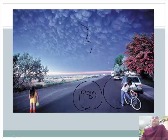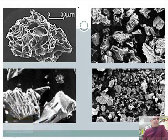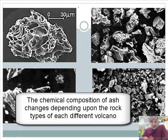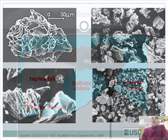Here's ash zoomed in under a microscope. One thing you notice is that it's very ragged and jagged — don't think of it like smooth sand. It's actually very sharp, making it very dangerous to breathe because it would damage your lungs. Also interesting: the chemical composition of ash changes based on the chemistry of the rocks beneath that particular volcano, varying from region to region, so you can also classify ash by chemical composition, not just size.